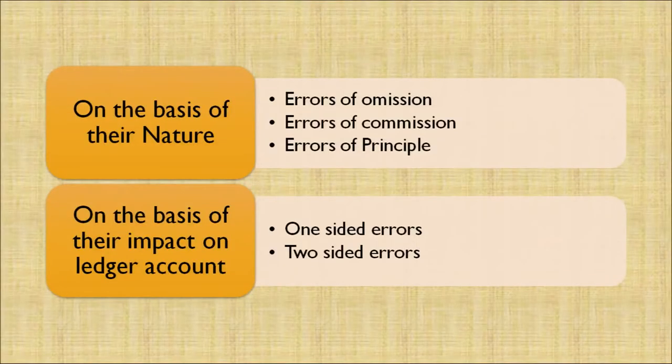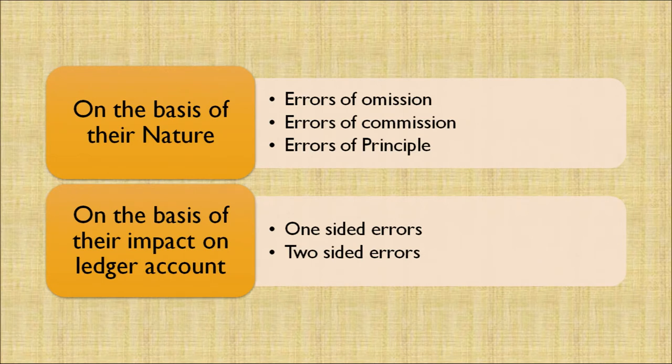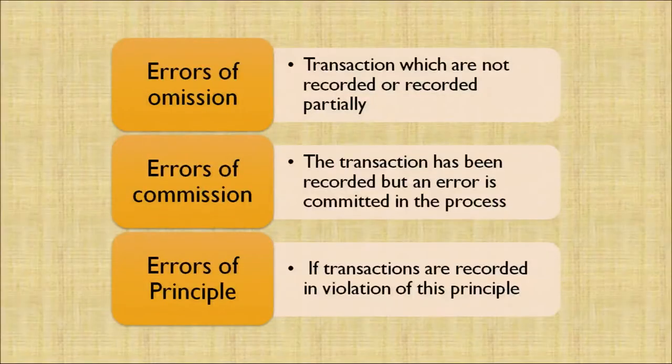Let's now discuss the classifications of errors. There are two classifications: one is on the basis of their nature, and the second is on the basis of their impact on the ledger amounts. On the basis of nature: first, error of omission; second, error of commission; third, error of principle. On the basis of impact on ledger amounts: one-sided errors, where the trial balance does not agree; and two-sided errors, where the trial balance agrees but there is an impact on the principal side.